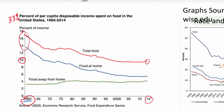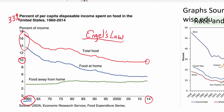This observation — that as people in an economy get more income, the percentage of their budget spent on food goes down — is called Engel's Law, named after the economist Engel who first observed this.